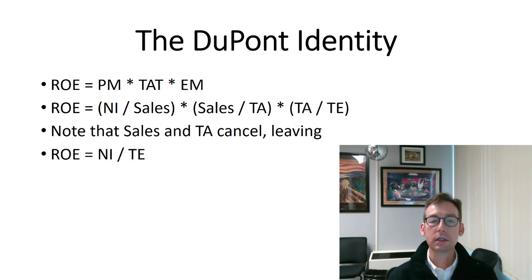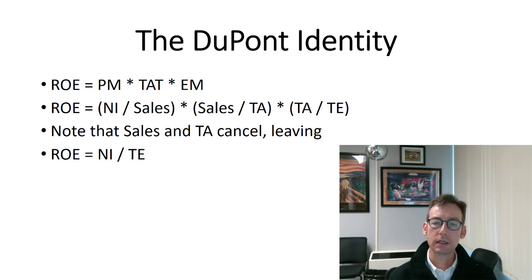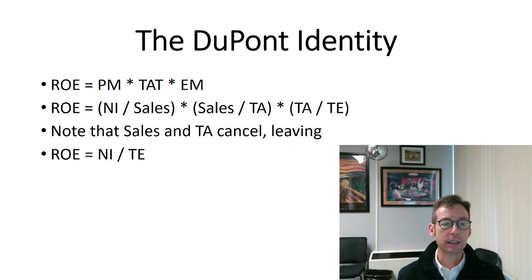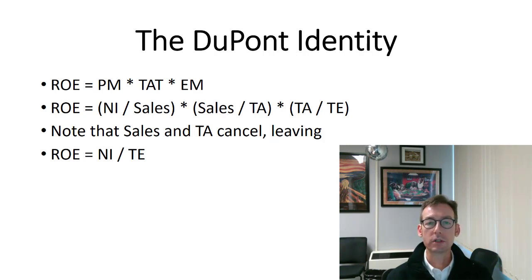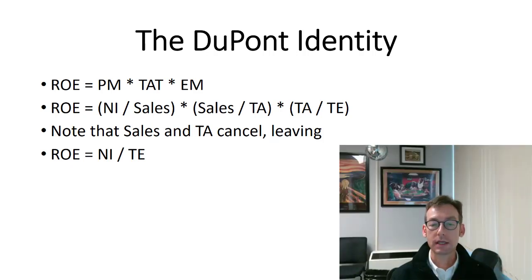So let's talk about how we might calculate return on equity. Return on equity is just net income divided by total equity, and if you're given those two things you can calculate it that way. But often instead of giving you those plain ingredients, we'll give you other stuff you need to use to get back to ROE. One of those things could be the DuPont identity — we could give you information to find the profit margin, total asset turnover, and the equity multiplier. Profit margin is net income divided by sales. Turnover is sales divided by total assets. And the equity multiplier is total assets divided by total equity.